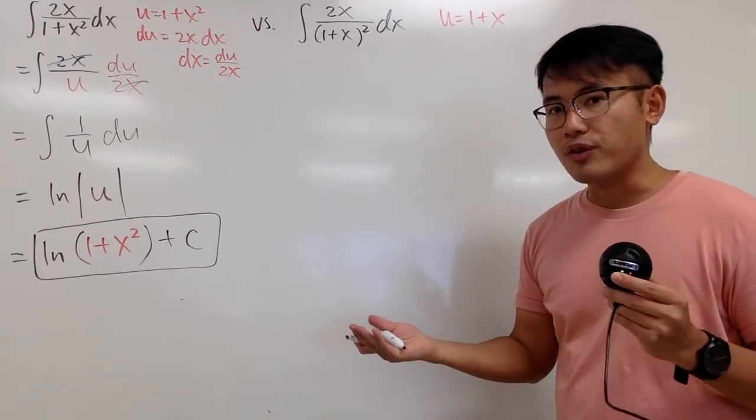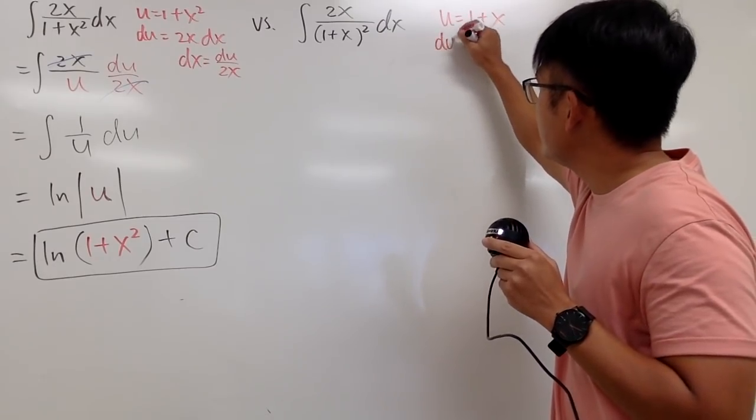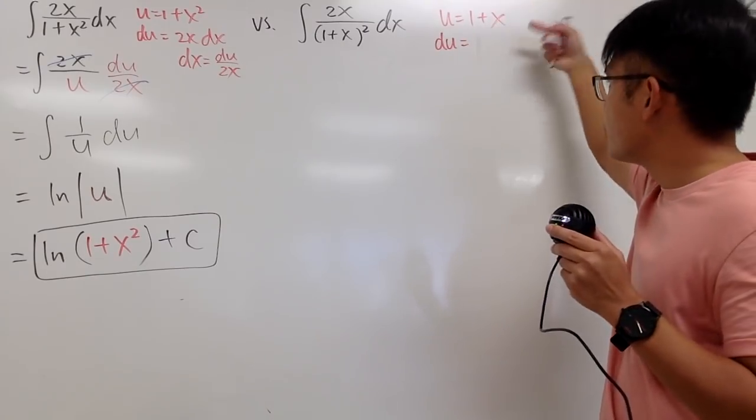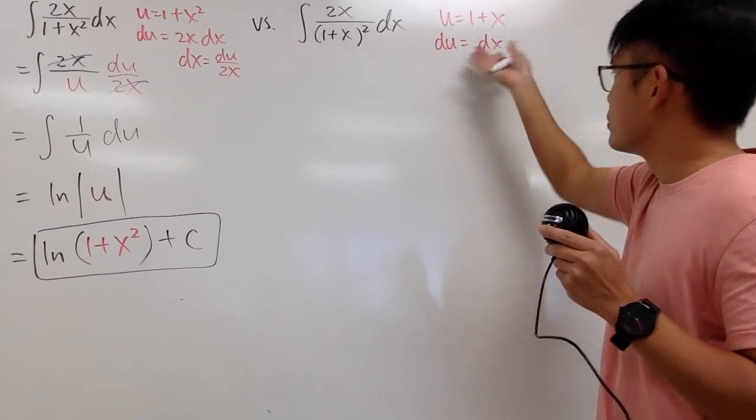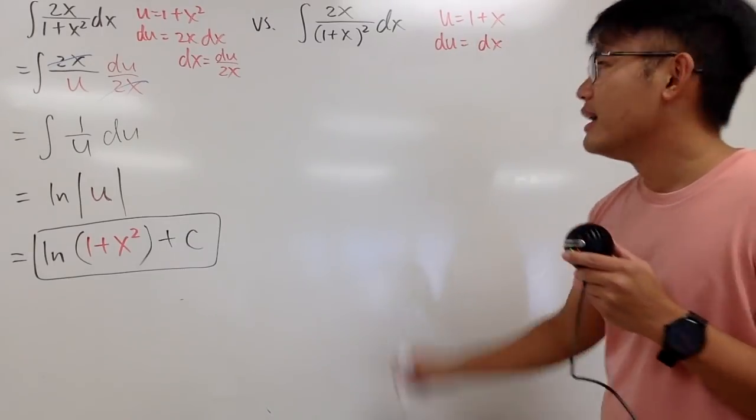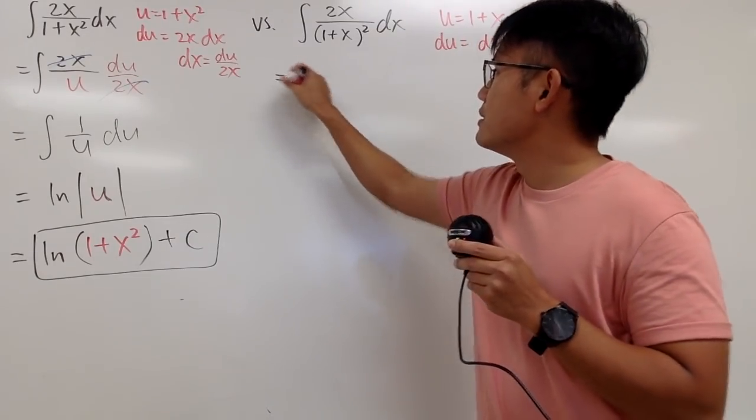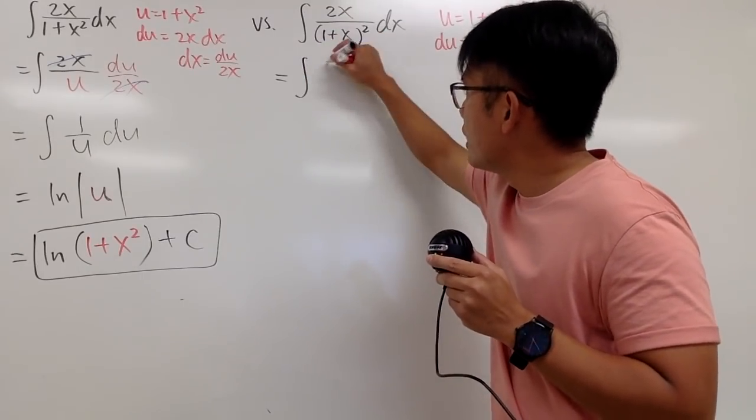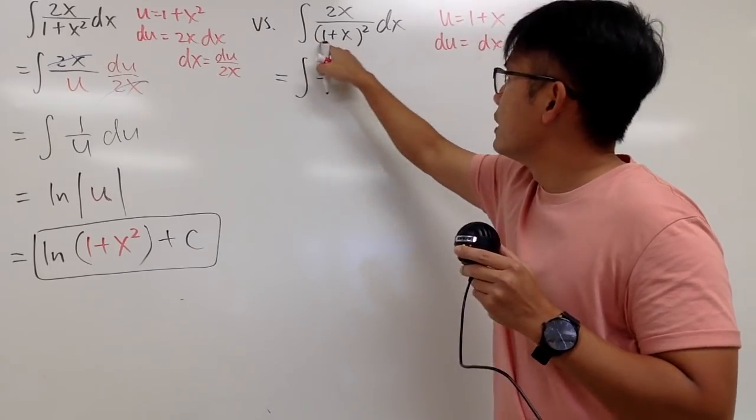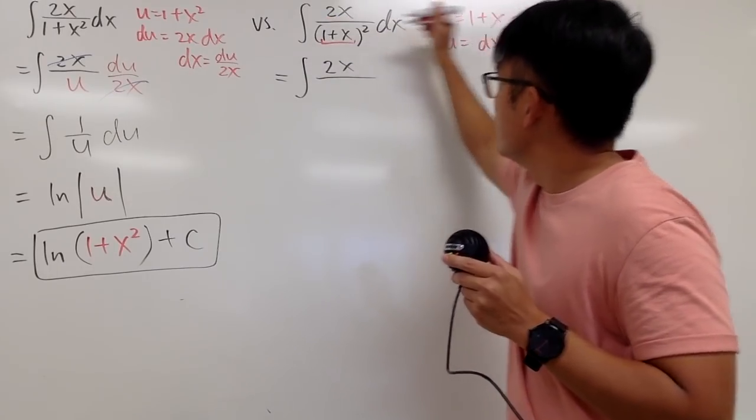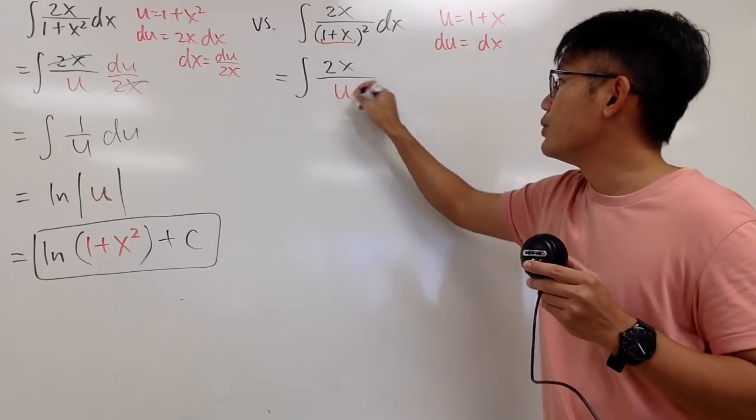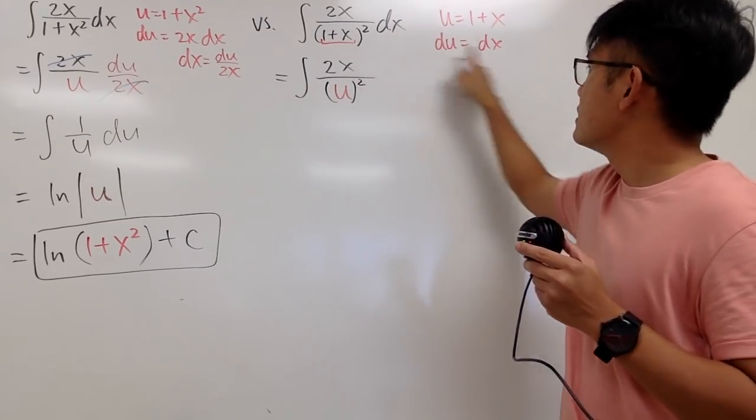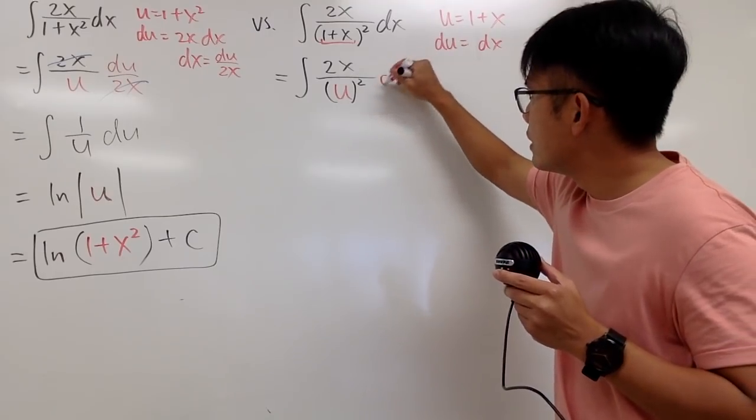And let's see what we can do from here. Differentiate both sides. I get du equal, the derivative of this is just 1. And don't forget to multiply by dx. So it's just du and dx are the same. And now I will take this to the u world. Let's see what happens. The integral, the 2x on the top, over this inside, is my u. So I'll write this down as u to the second power. And for the dx, it is the same as du, like that.